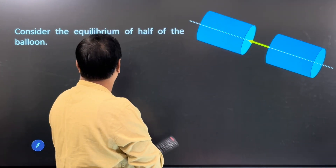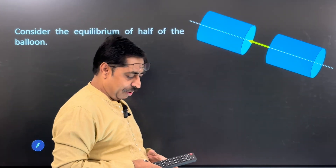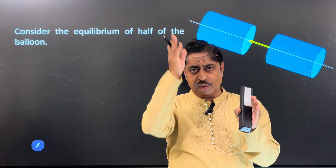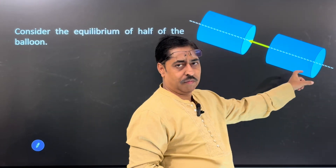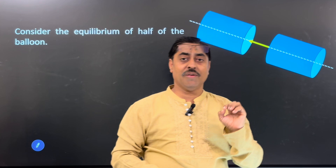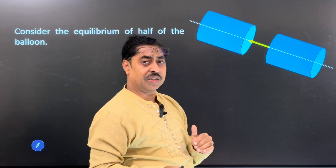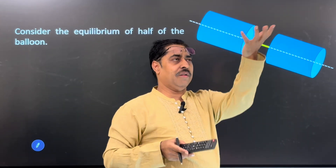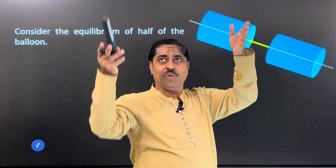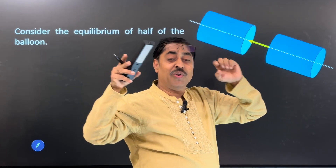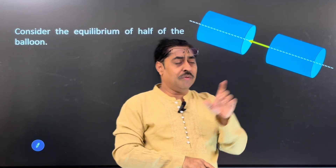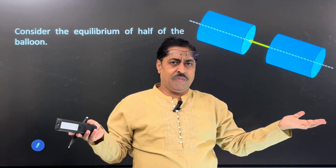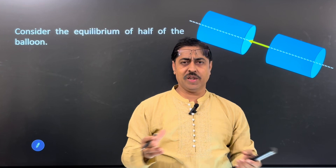Here we go. First, let us consider the equilibrium of half of the balloon. What it actually means is you should mentally divide the balloon into two equal halves. This dotted line is the axis of the balloon, the axis of the cylinder. There is no gravity, so if you leave the balloon it stays in place. Every part of the balloon is in equilibrium, so one half of the balloon is also in equilibrium.